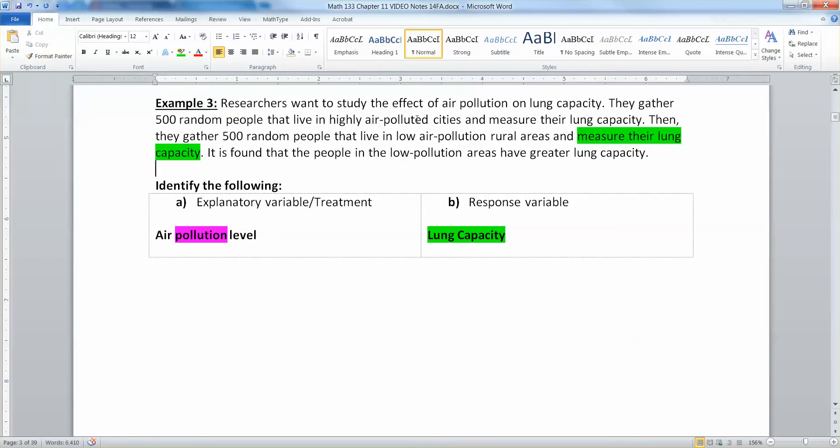And then pollution, it's kind of more hidden in the text. But right here it says, does air pollution affect lung capacity? So air pollution, that's your explanatory variable. Lung capacity, that's your response variable. What is the effect that it has? That's another way to see it right there.